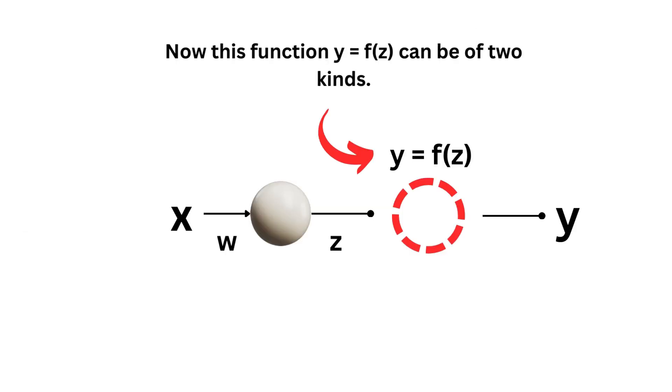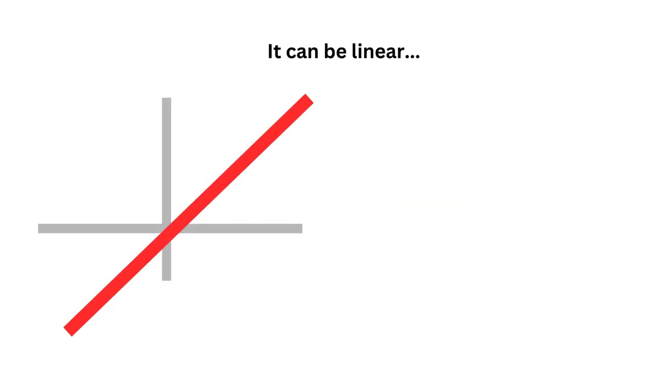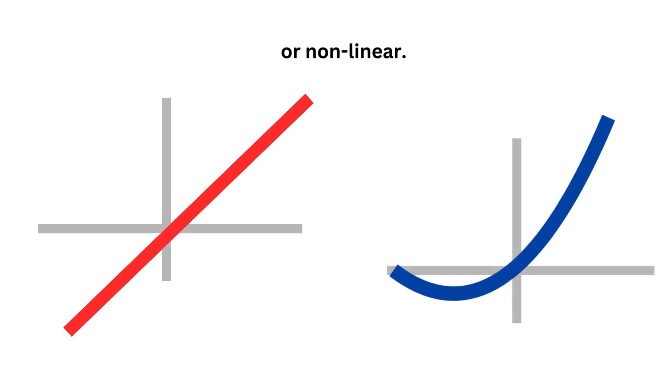Now this function y equals f of z can be of two kinds. It can be linear or non-linear.